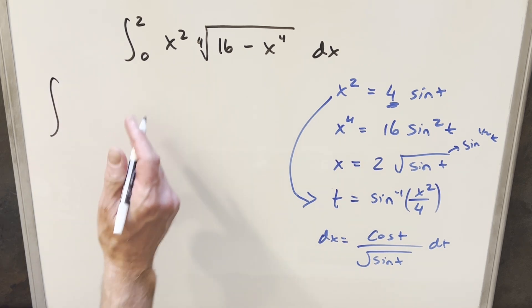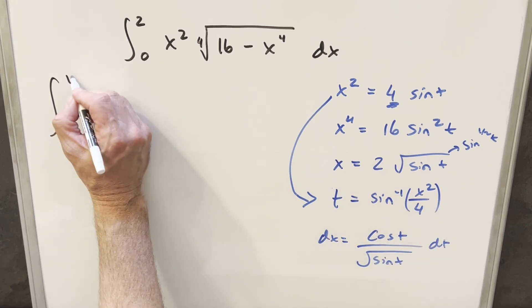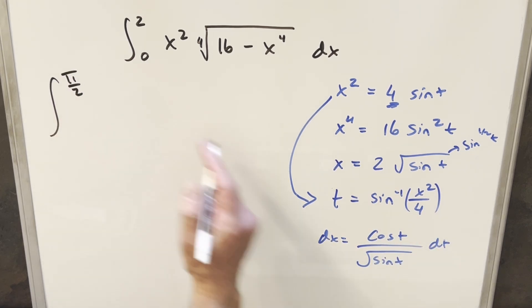So now we'll just go ahead and substitute this. So first we'll take our 2 and plug it in here. 2 squared is going to give me 4 over 4. Arc sine of 1 is that pi over 2. Then plugging 0 in here, arc sine at 0 is just 0.